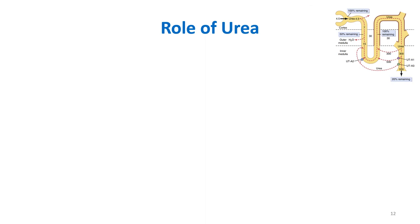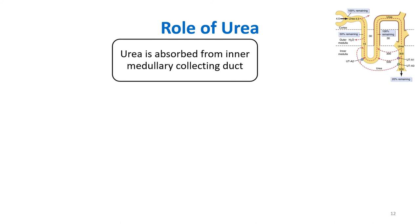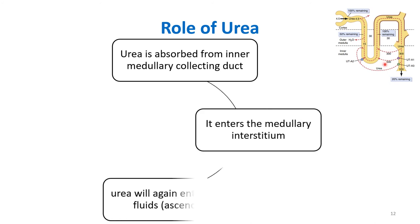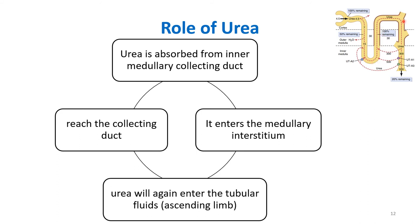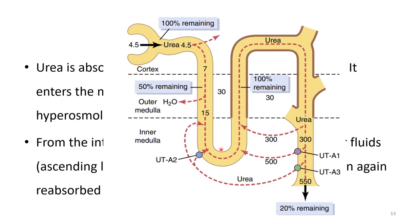After that, write about the role of urea. Urea is reabsorbed from the inner medullary collecting duct and re-enters the medullary interstitium. From there, it again enters the ascending limb of the loop of Henle, reaches the collecting duct again, and is reabsorbed once more. This recycling of urea maintains the hyperosmolarity of the interstitium. You can draw a diagram showing how urea is first filtered from the glomerulus, travels through the tubule to the collecting duct, is reabsorbed by a transporter, is transported back into the tubular fluid, and cycles continuously.